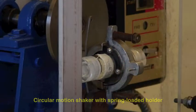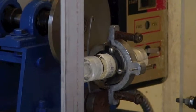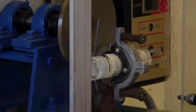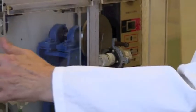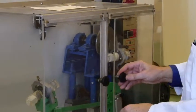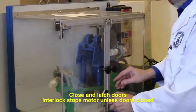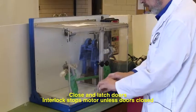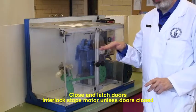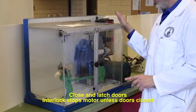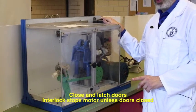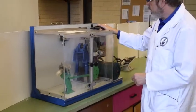Now, because this is a moving item, we need to protect us from it rather than pinch hazards. So the lucite doors close, and there's an interlock there. And until the doors are closed, the agitator will not work.